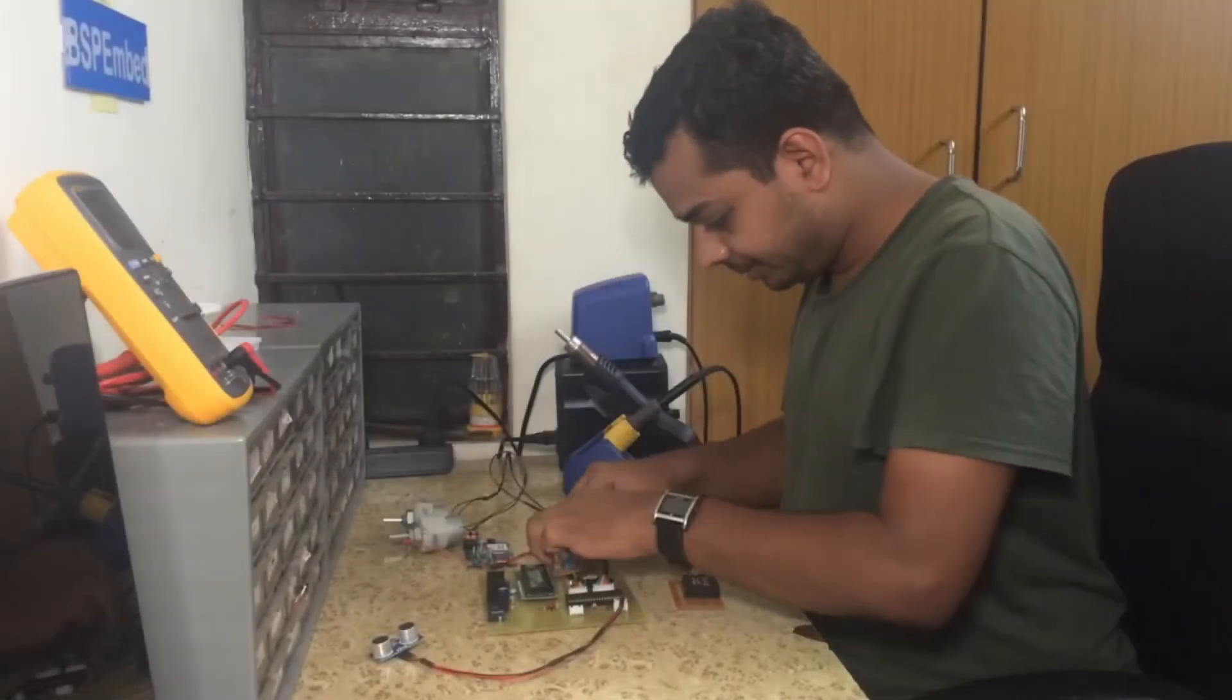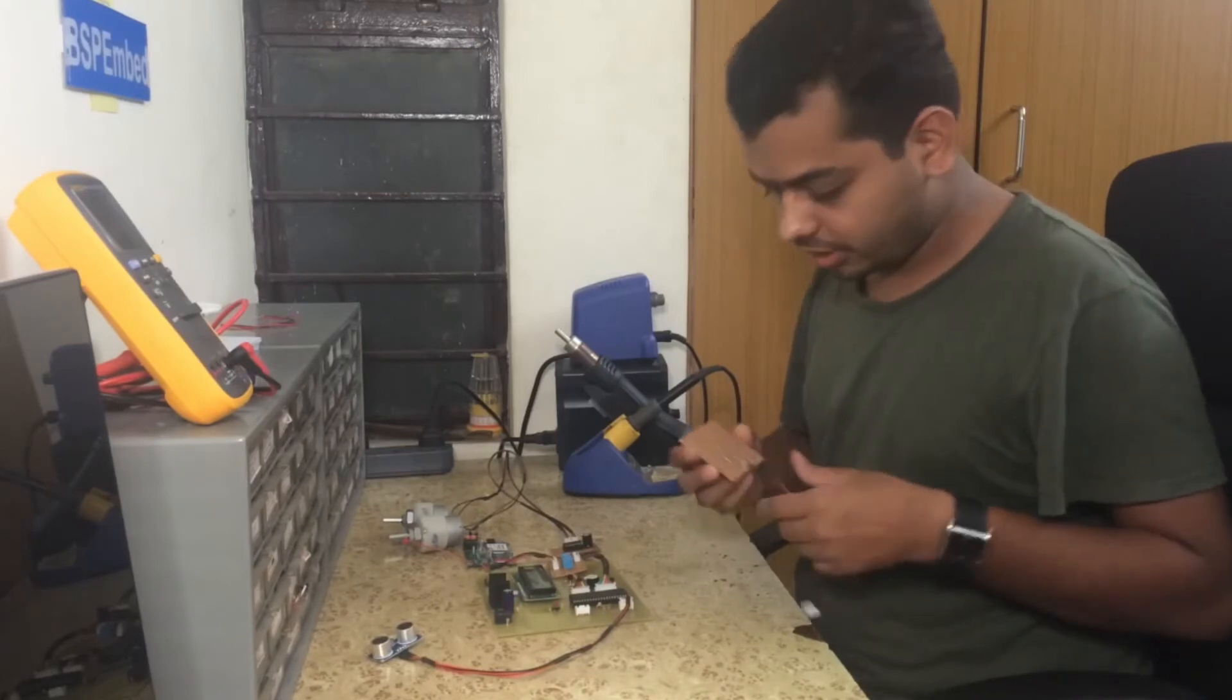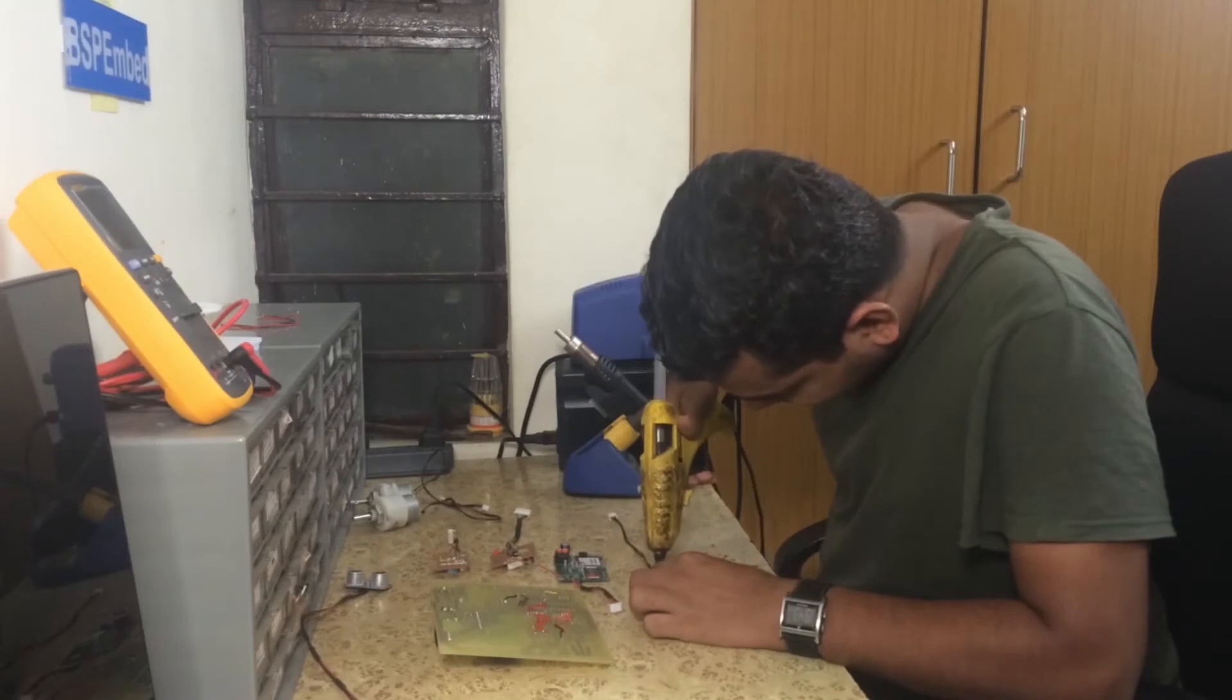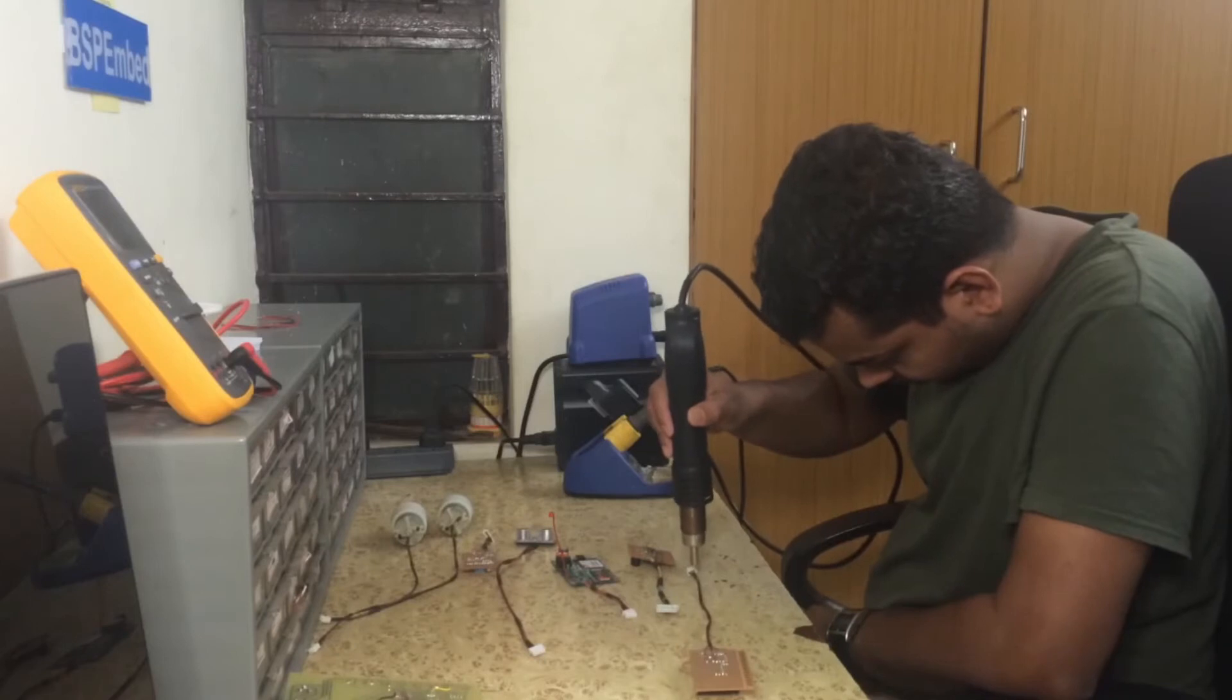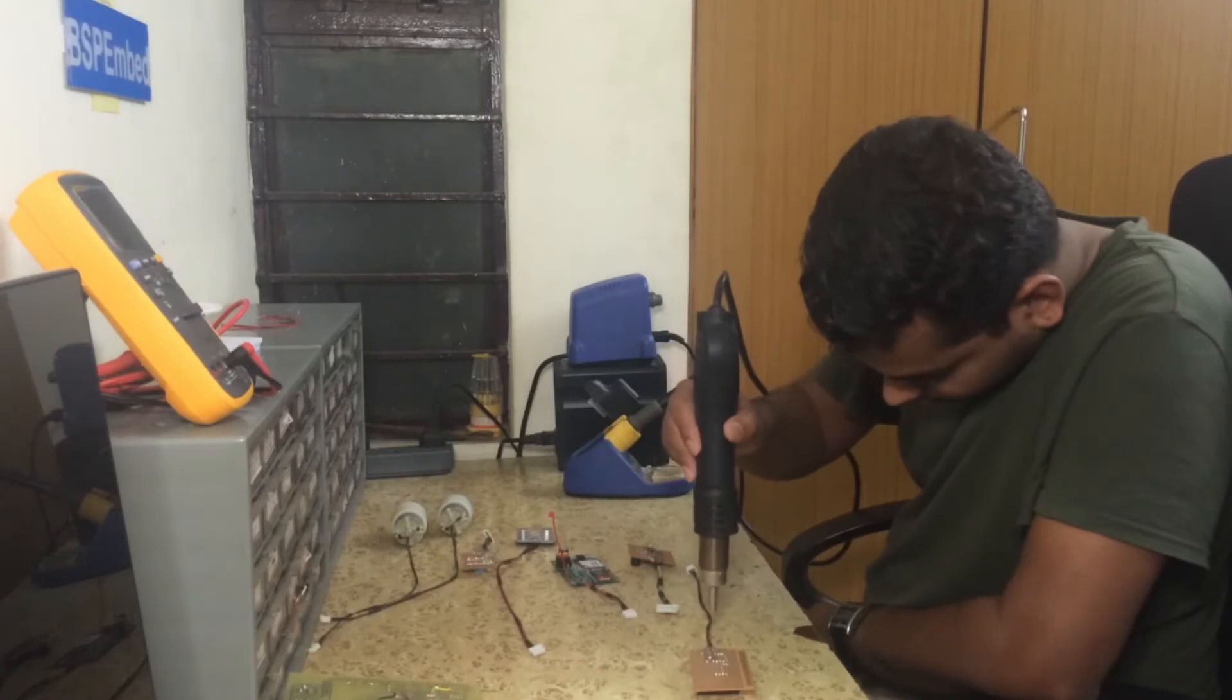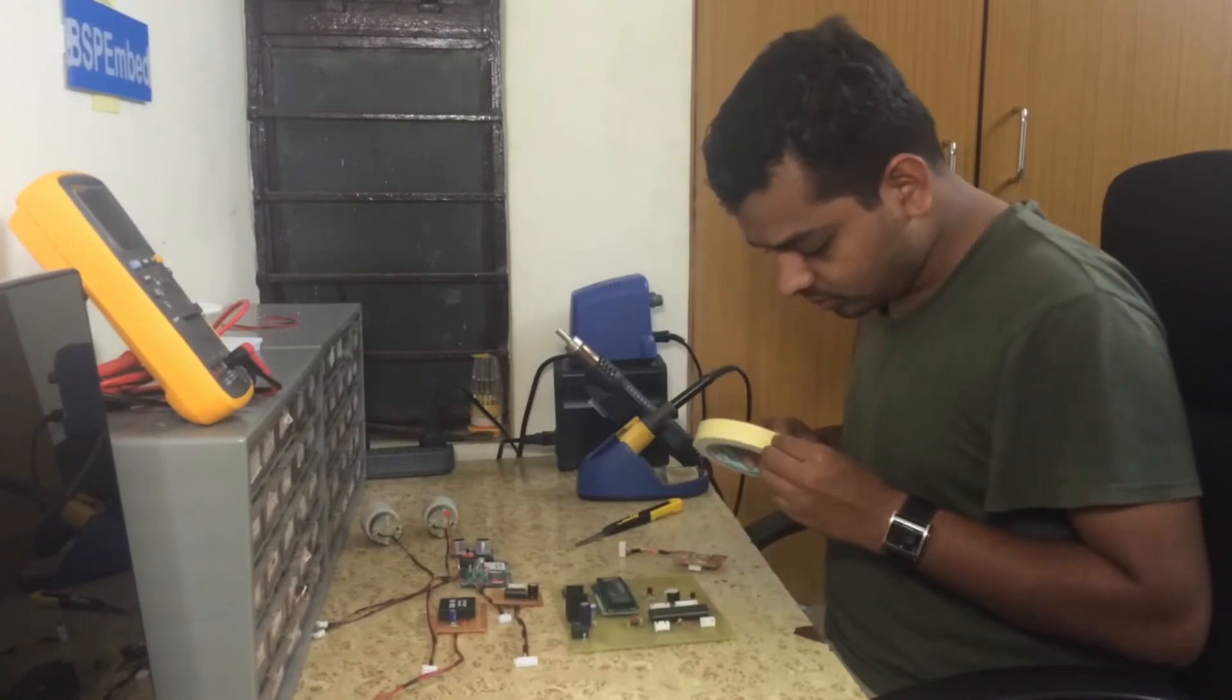Since this microcontroller and other modules have to be mounted on the vehicle, I had to put hot glue wherever I soldered the wires. Since I used heat shrinkable tubes, I needed to shrink them down. I used the hot air gun to shrink the tubes. I used double-sided tape to fix the modules onto the vehicle.